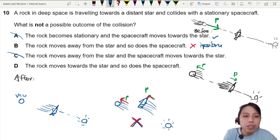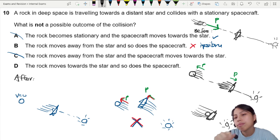Okay this is possible. Last one, the rock moves towards the star and so does the spacecraft. Oh they stick together and move, impossible. So now they are both next to my head here, the rock is stuck to the spacecraft and they are both flying towards the star. Inelastic collision, possible because you still have that momentum towards the star.